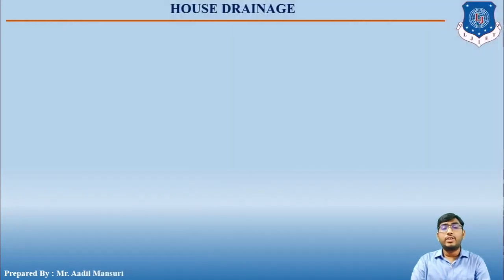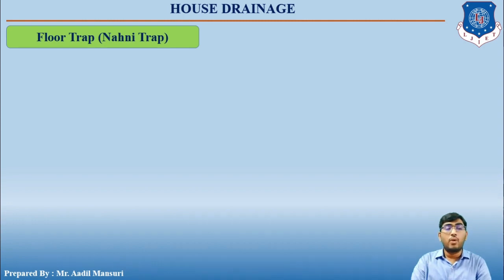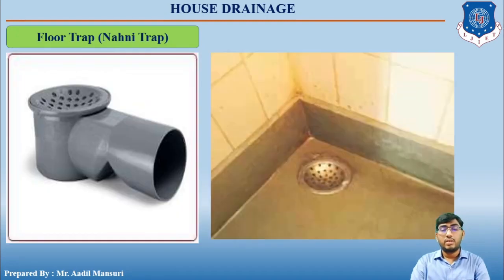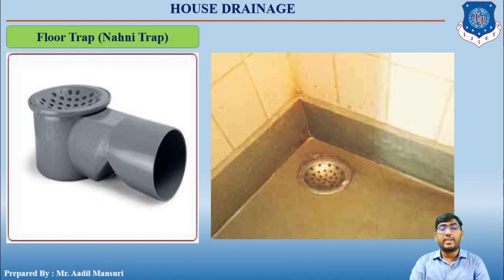Based on usage, there is a trap called a floor trap or nani trap. This trap is generally used to admit sullage from floors of rooms, bathrooms, or kitchens to the sullage pipe. It is provided with cast iron, stainless steel, or galvanized iron gratings at its top. Gratings are provided so that entry of large matter is prevented, thereby preventing blockage. A commonly used name for this trap is nani trap.